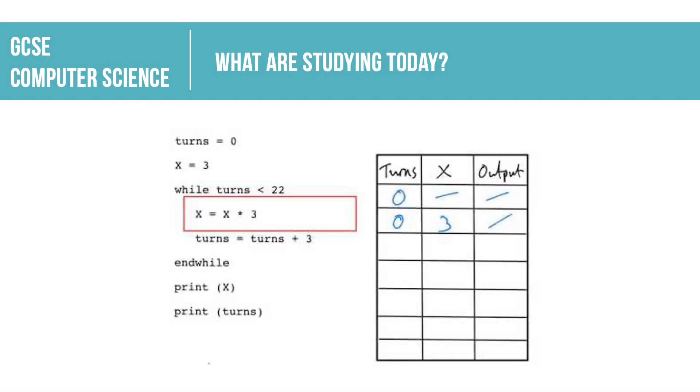Hello and welcome to this latest video in the OCR GCSE computer science series. This lesson looks at something called a trace table. On your screen you can see an example of some computer code and then how we might use a trace table to check what our algorithm is going to be doing at any given point in time.